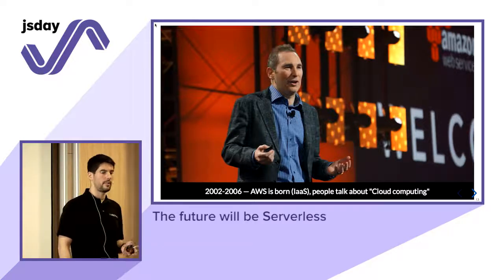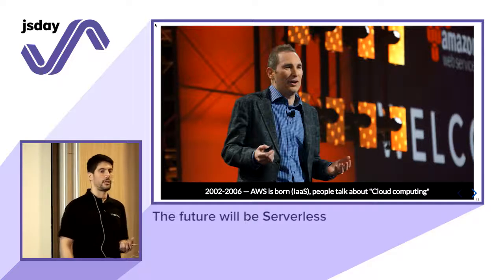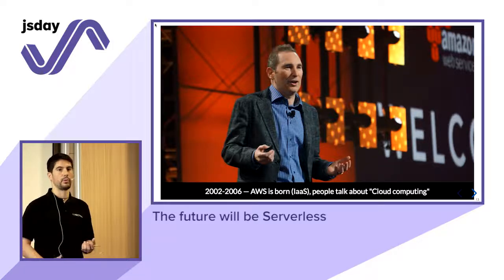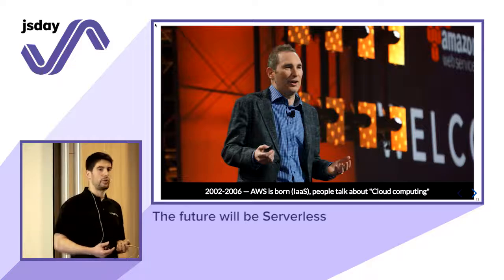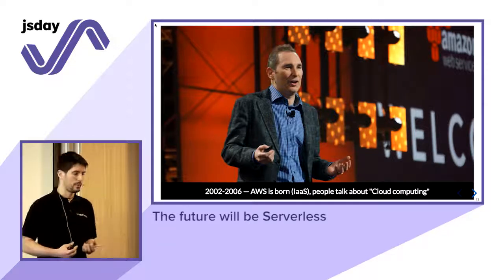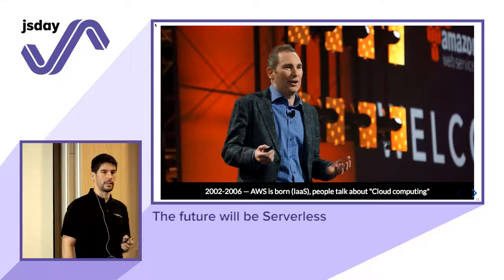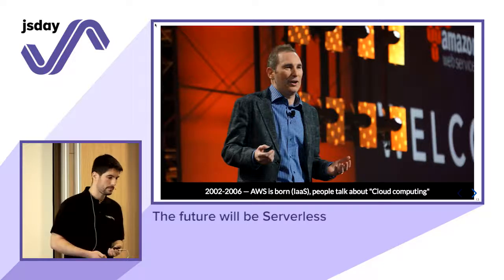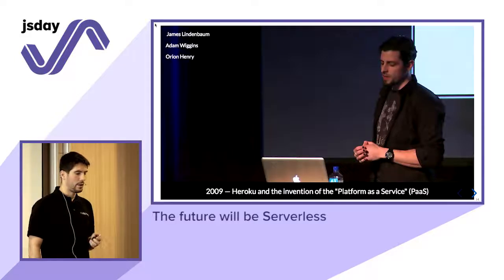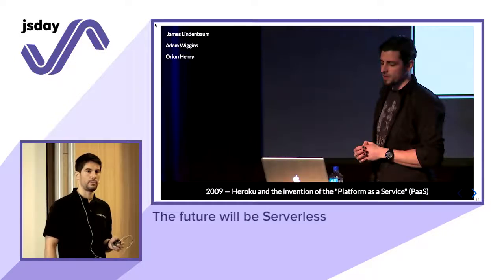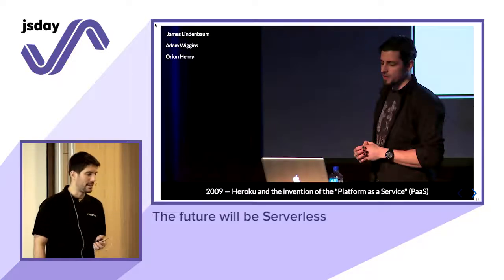In 2006, they figured out what value developers were looking for and created a package consisting of EC2 for virtual machines, S3 for virtual storage, and SQS for more scalable jobs on the cloud. This was called infrastructure as a service, and eventually became the concept of cloud computing.